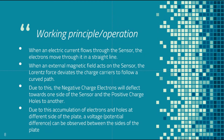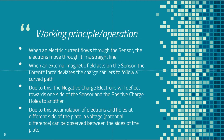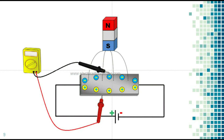The working principle: when an electric current moves through the sensor, the electrons move in a straight line. When an external magnetic field acts on the sensor, the Lorentz force deviates the charge carriers to follow a curved path. Due to this, negative charge electrons deflect to one side of the sensor and positive charge holes to the other. This accumulation creates a voltage observable between the sides of the plate.